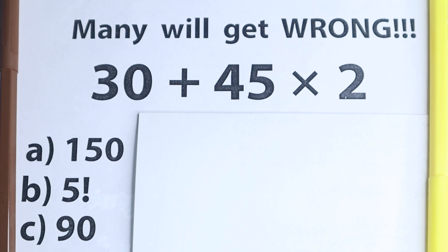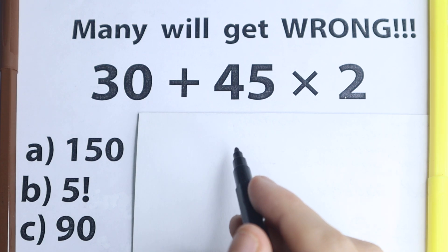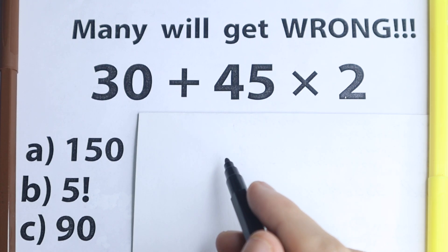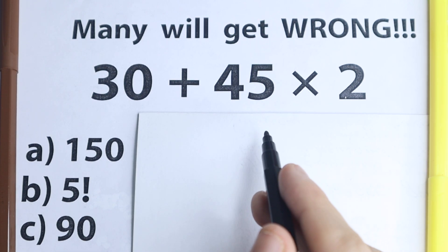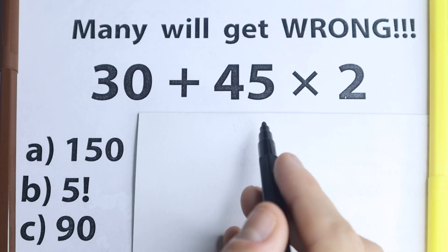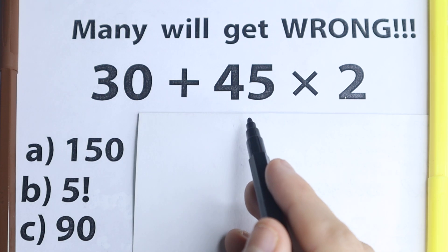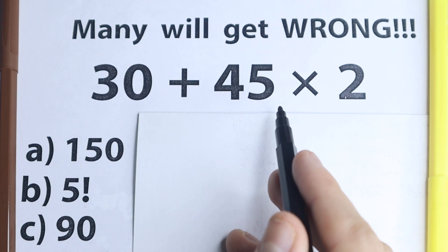Hello everyone! Happy to see you here. In this video we are going to do a very simple math problem, and you're going to be surprised that many of you are actually going to get this wrong. I don't want you to use your calculator right here, because here is the problem: we have 30 plus 45 times 2. So what is the correct answer?